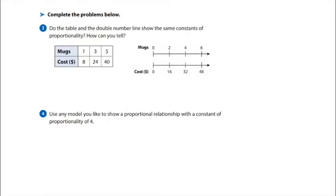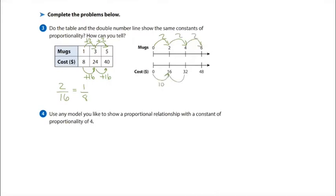Do the table and double number line show the same constant of proportionality? To go from 1 to 3 on the bottom I add 2, and going from here to here on the top I'm adding 16 each time. So the constant of proportionality is 2 over 16, or one-eighth. On the double number line, increments are also plus 2 on the bottom and plus 16 on the top — same constant of proportionality: two-sixteenths, which is one-eighth.